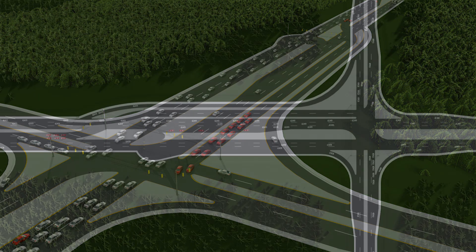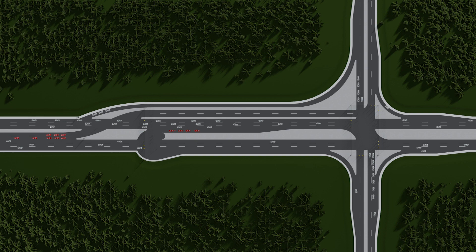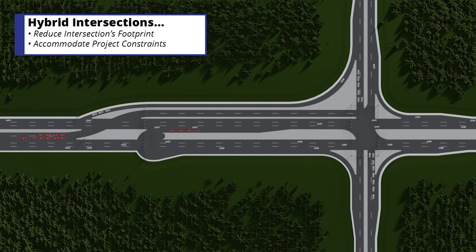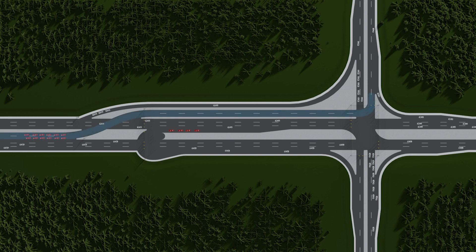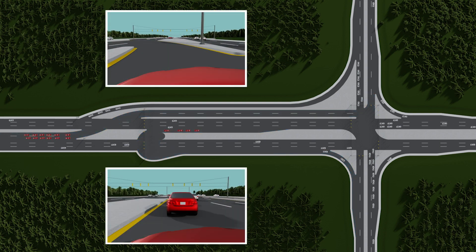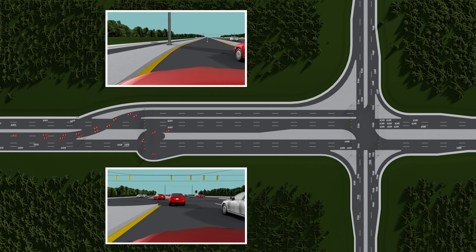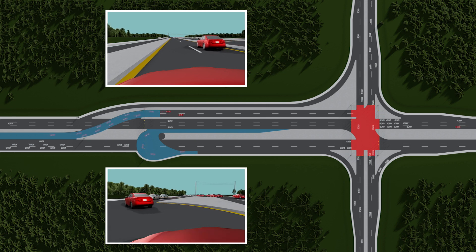A hybrid solution in alternative design is an approach that includes elements from two different intersection types, often used to ensure an intersection design fits within the constraints of a project's footprint. This intersection could not support two displaced left turns due to those constraints, so this hybrid solution features a displaced left turn and a boulevard left turn. The boulevard left turn is spatially compact and offers the same benefit of removing the left turn from the main intersection.